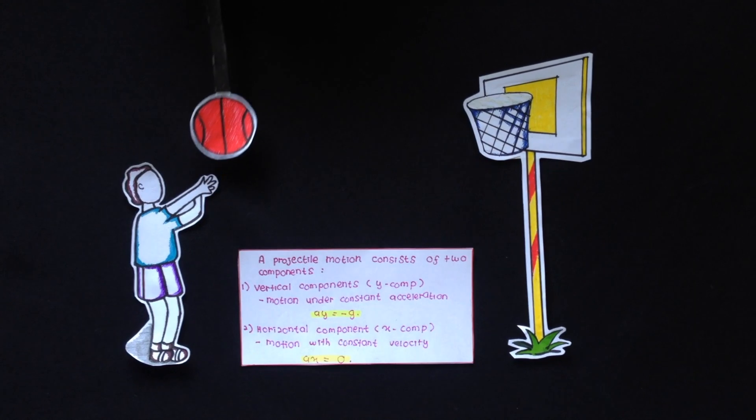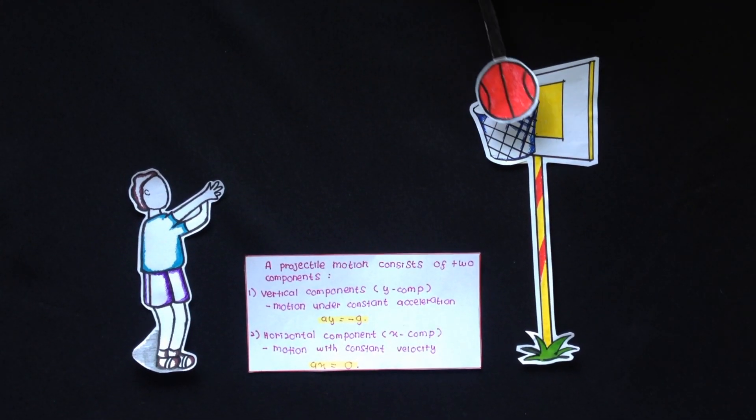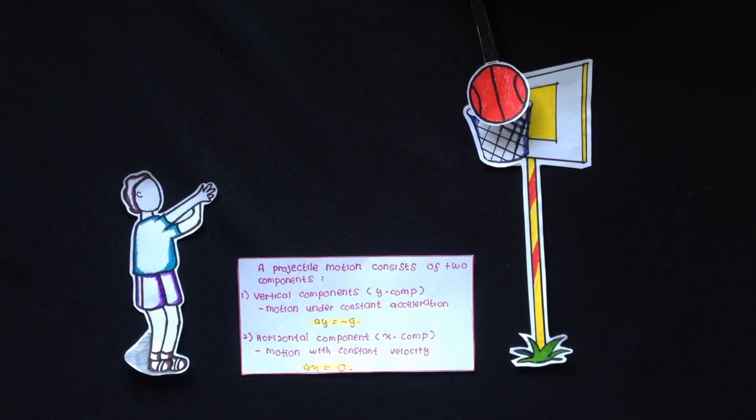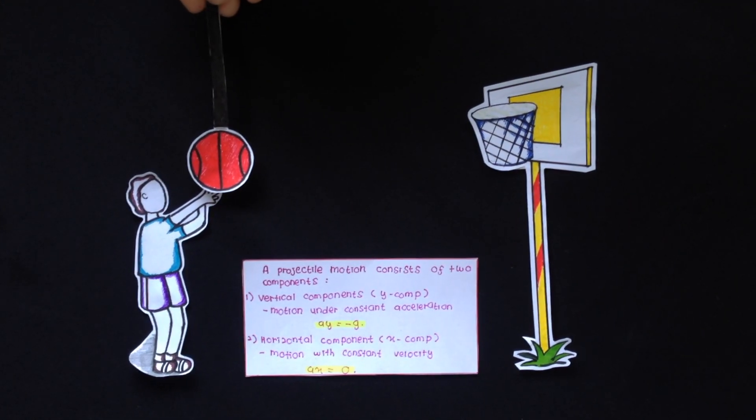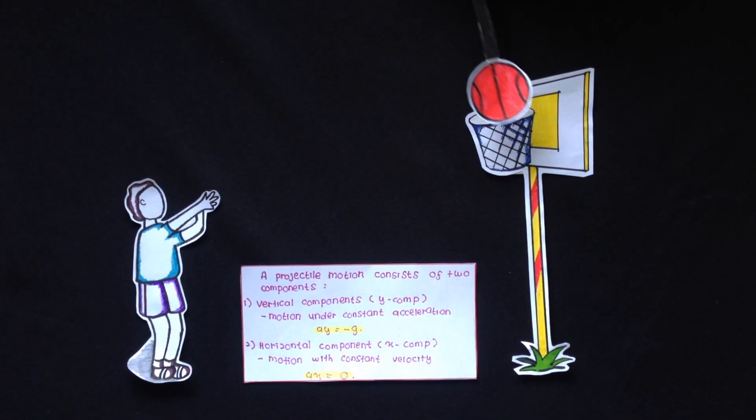As the ball flies through the air in the curved path, there are two main components of velocity affecting the ball. That's two velocity components, the horizontal x and vertical y are vectors.